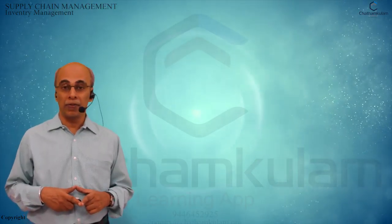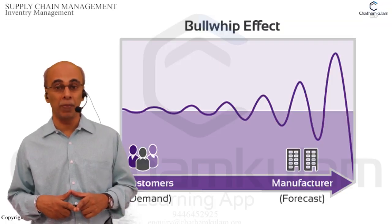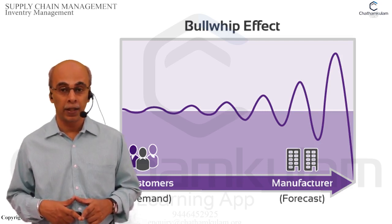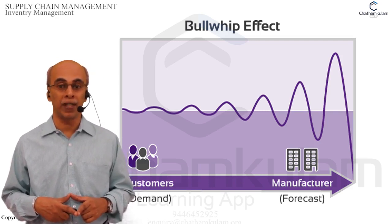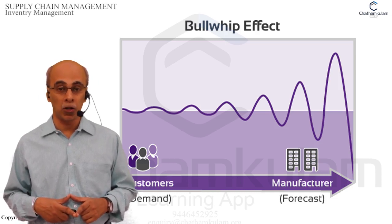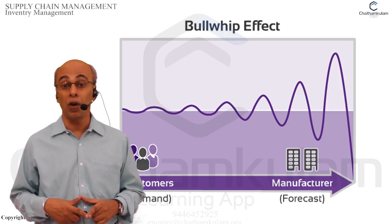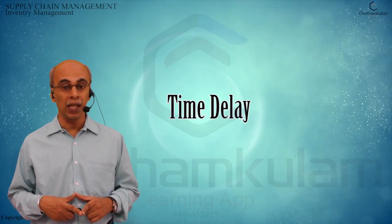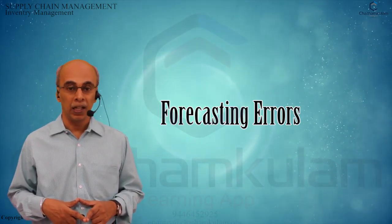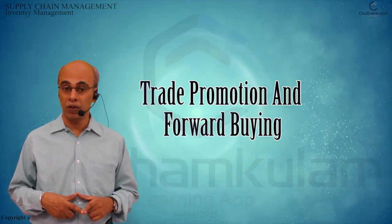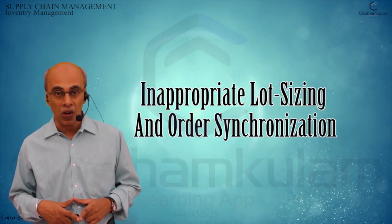A topic commonly referred to under inventory management is the bullwhip effect. It is a common phenomenon observed in forecast-driven distribution channels, referring to major swings and variations in inventory that get amplified upstream in a supply chain. Various behavioral and operational bottlenecks are responsible, including: misuse of base stock policies, time delays, panic order reactions after unmet demand, forecasting errors, lead time variations, trade promotion and forward buying, and inappropriate lot sizing and order synchronization at the discretion of dealers.